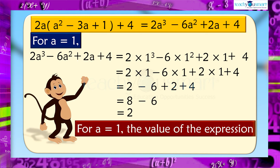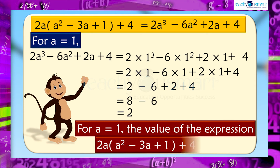The value of the expression 2a multiplied by a squared minus 3a plus 1, plus 4, is 2.